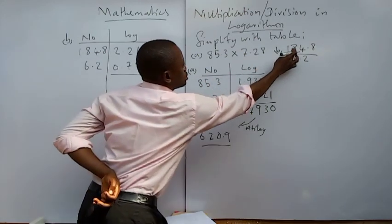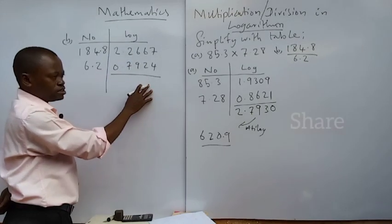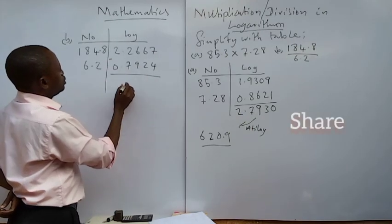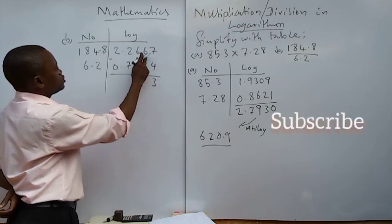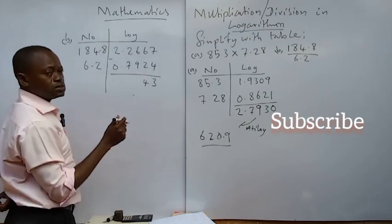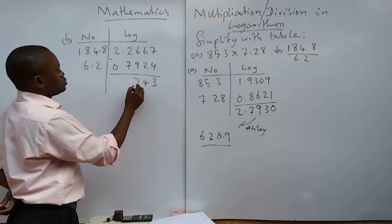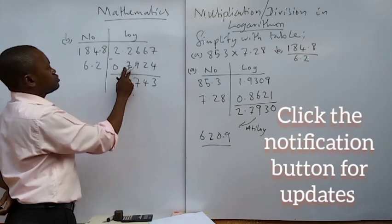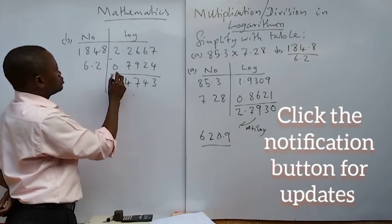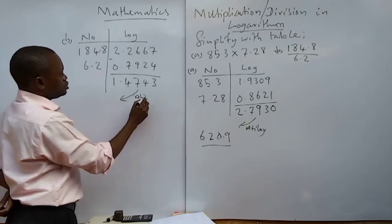Now what is going on here? This is division. And when you are dividing two numbers, you subtract their logarithm. So we are going to subtract these two numbers. 7 minus 4 is 3. This minus 2 is 4. 6 minus 9 not possible. Take one here, put it here, it will be 16. 16 minus 9 is 7. This is 1. 1 minus 7 not possible. Take one here, put it here, it will be 11. 11 minus 7 is 4. This is meaning 1. 1 minus 0 is 1. Put your decimal point. You can find the antilog.